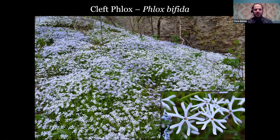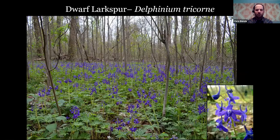At LaRue Snake Road we have dwarf larkspur. We have two larkspur species in Illinois — the other is Delphinium carolinianum, a summer bloomer that is rare and on our endangered species list. This one is restricted to the south, but it's a stunner when you see a huge expanse of it. There's just not a lot of wildflowers that have this sort of rich blue-purple color. It's in the buttercup family: Delphinium tricorni.